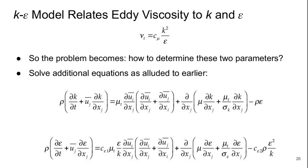So the k-epsilon model relates the eddy viscosity to k and epsilon. We get the turbulent viscosity is some constant which is just a tuned parameter of the model, and it's related to k squared over epsilon. So the problem becomes how do we find k and epsilon? Basically we solve two additional equations as alluded to earlier for these parameters, and here's the equations.